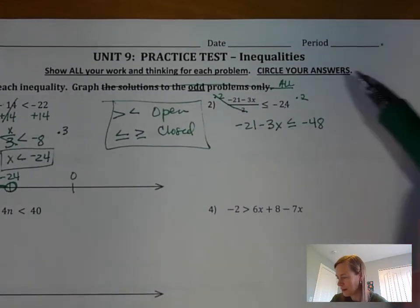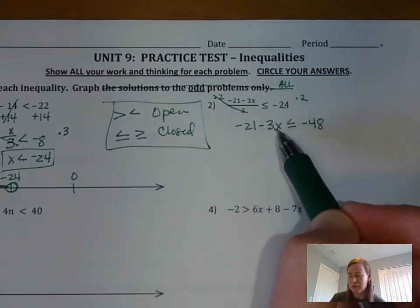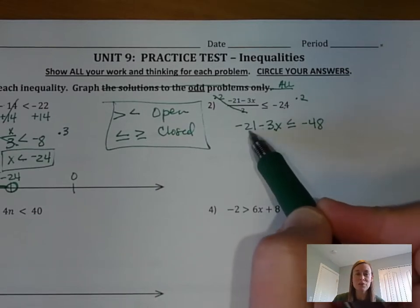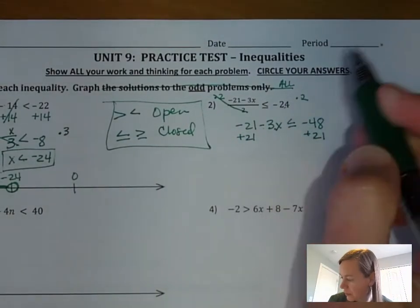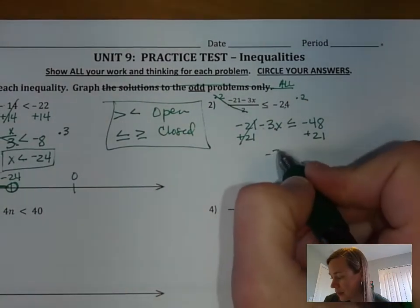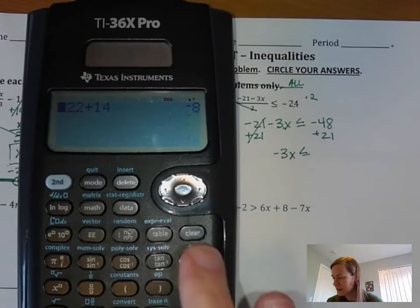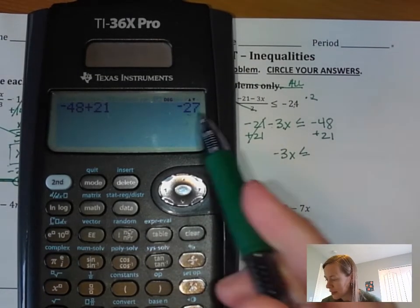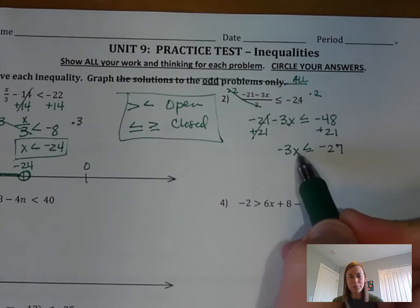Wait — it should be negative 48 since 24 times 2 with the inequality gives us negative 48. Now this is looking more manageable. We have negative 21 minus 3x. We need x by itself, so get rid of the number farther from x first, which is negative 21. We add 21 to both sides — that goes to 0 — and we're left with negative 3x is less than or equal to negative 48 plus 21.